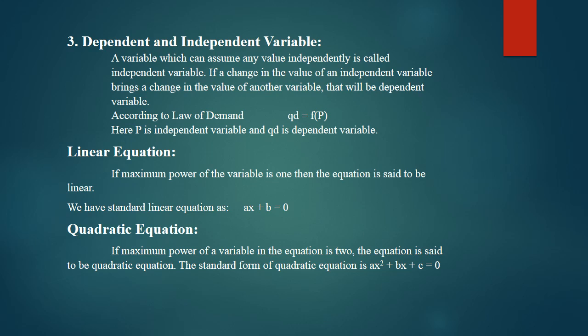If the highest exponent in the given equation is 1, then it is a linear equation. For example, ax + b = 0, where the exponent of x is 1, is a linear equation. Similarly, ax + 2 = 3 is a linear equation since the highest power of x is 1. The next type is the quadratic equation — if the maximum power of a variable in the equation is 2, it is a quadratic equation. The standard form is ax² + bx + c = 0. There will be some questions in your book related to both linear and quadratic equations for practice.